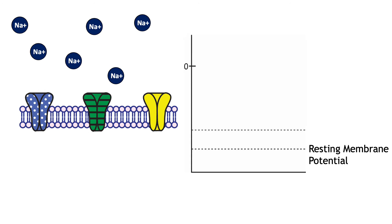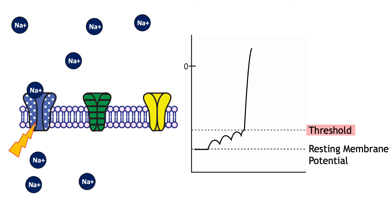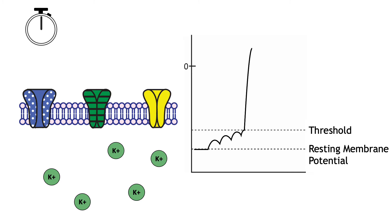The rising phase is caused by the opening of voltage-gated sodium channels. These ion channels are activated once the cell's membrane potential reaches threshold and open immediately. The electrochemical gradients drive sodium into the cell, causing the depolarization of the rising phase. The falling phase of the action potential is caused by the inactivation of the sodium channels and the opening of the potassium channels.